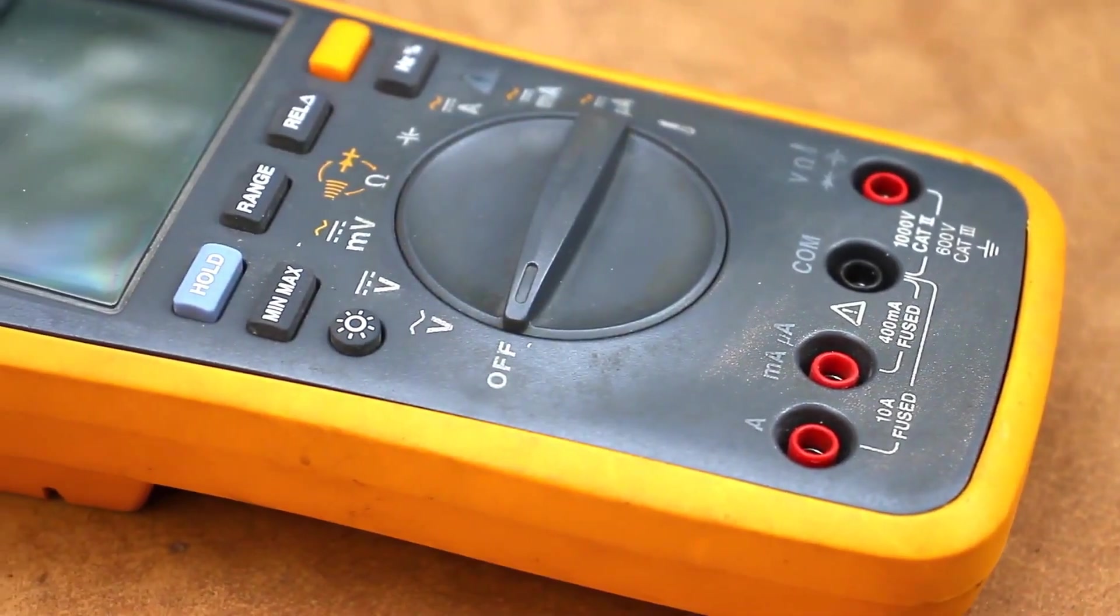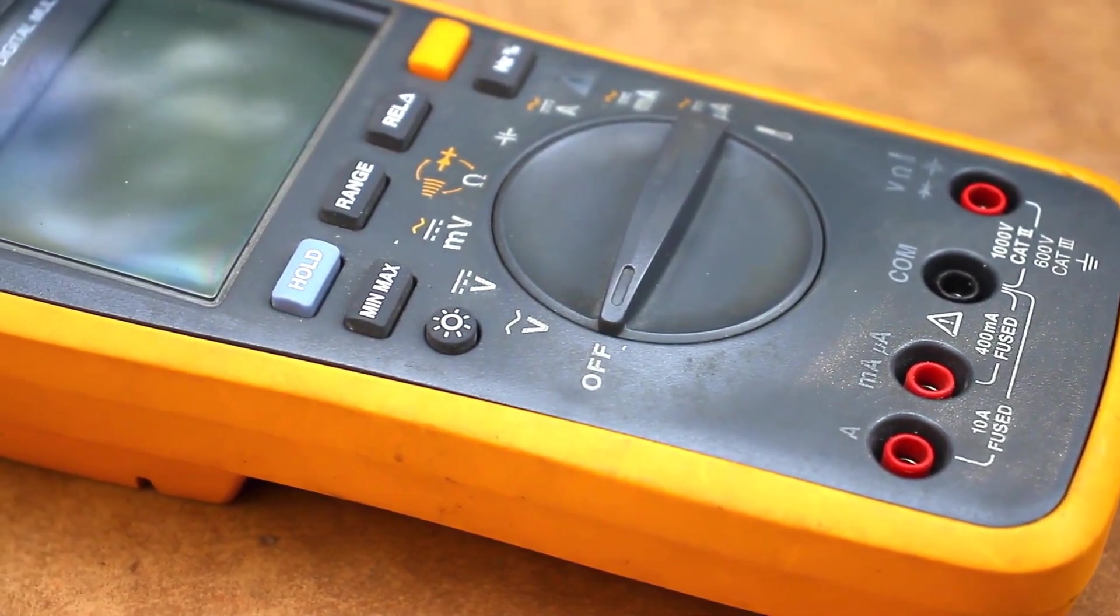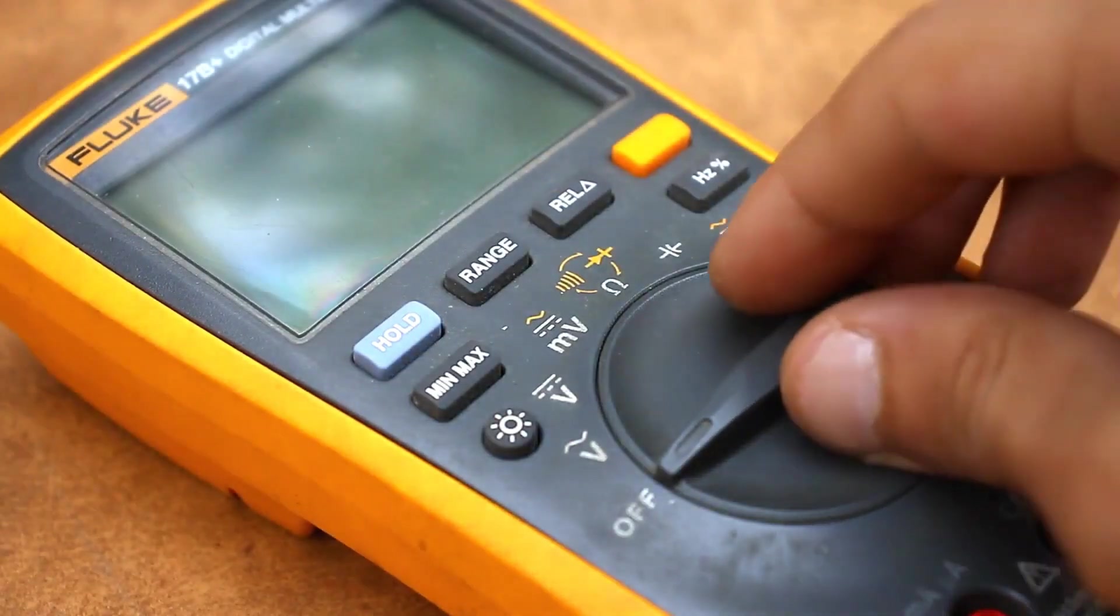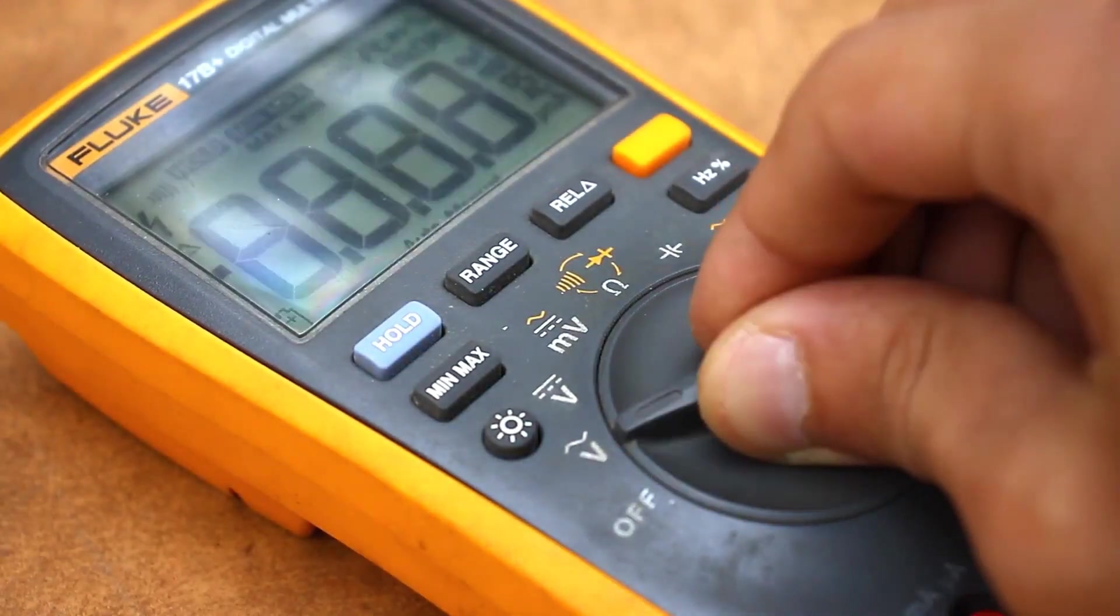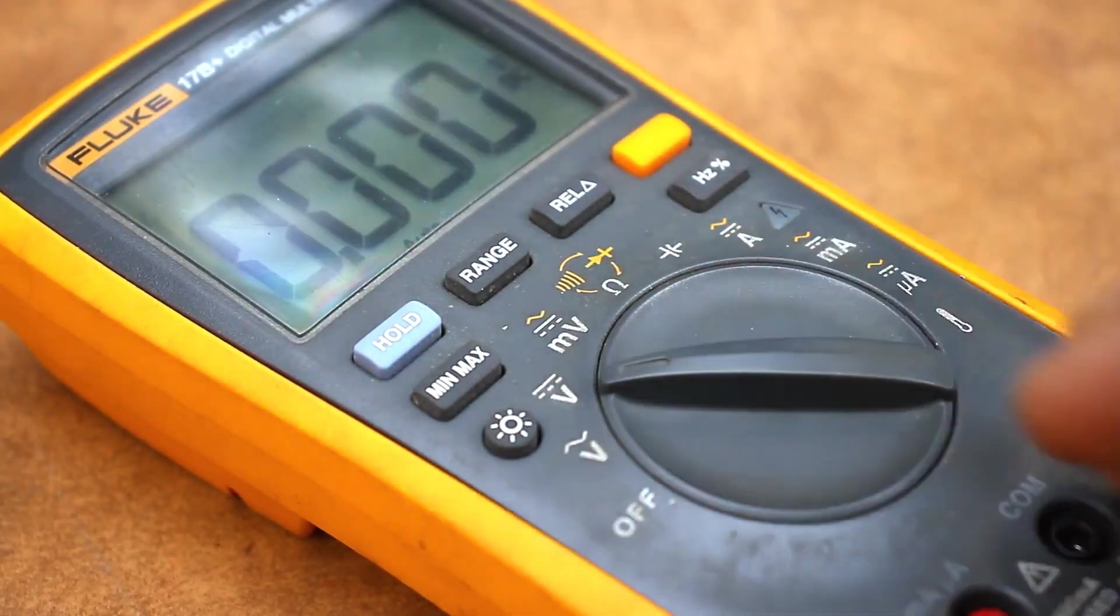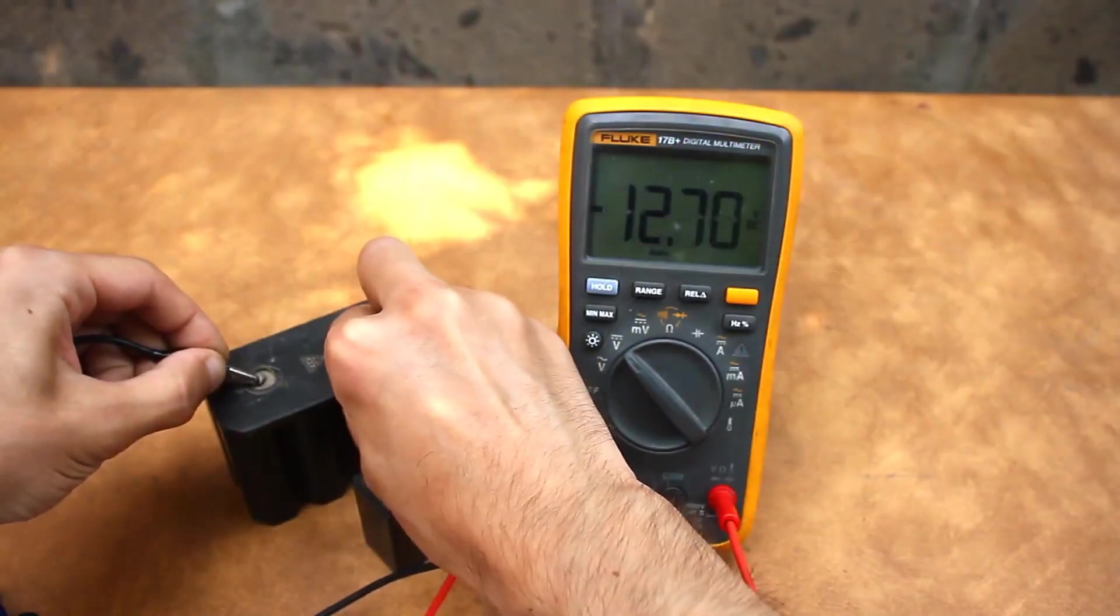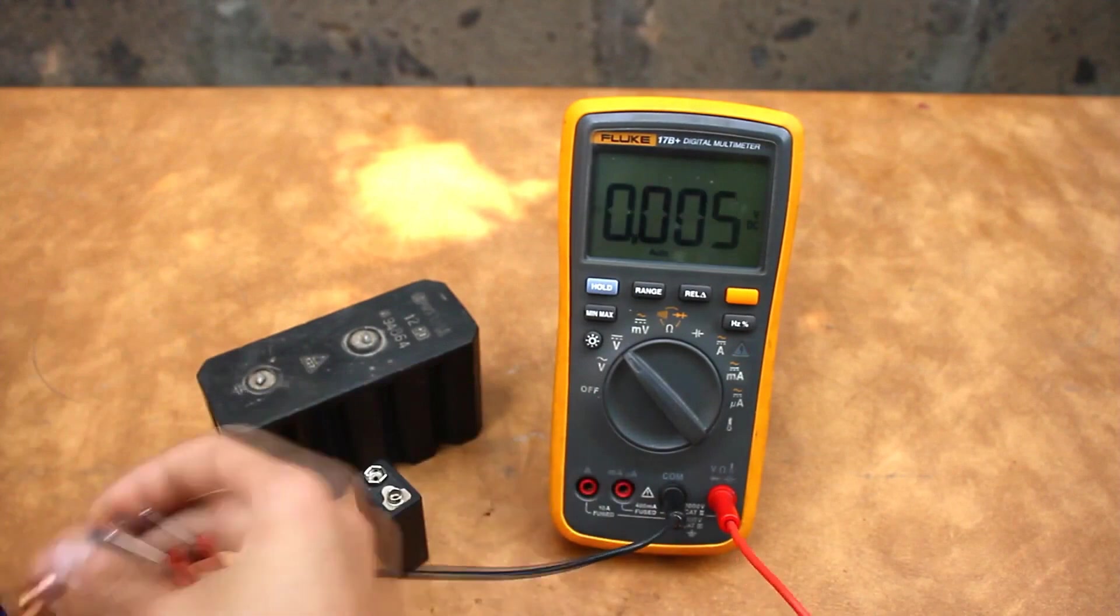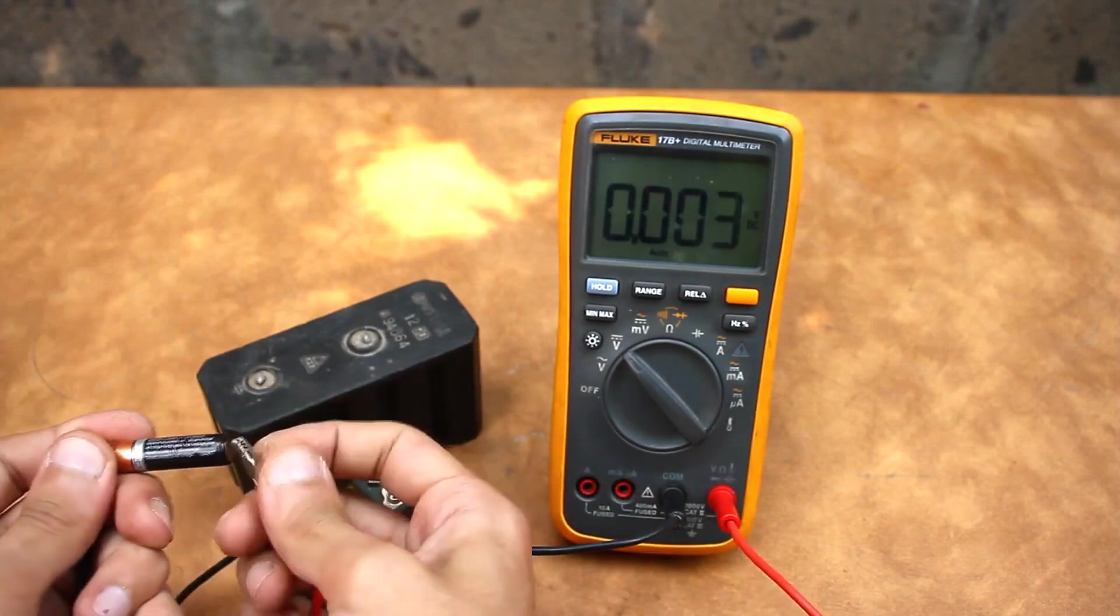In multimeters with auto range selection, everything is much simpler. Such multimeters are slightly more expensive, but what is required of you? For measurements, just switch to the appropriate measurement mode, for example DC voltage. The multimeter will automatically determine the voltage value in a fraction of a second and it will display the value on the screen.